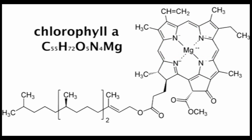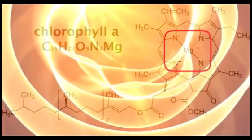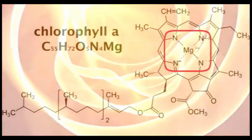This area is the key to the function of the chlorophyll molecule because electrons in this region become energized when they receive photons of light of certain wavelengths.